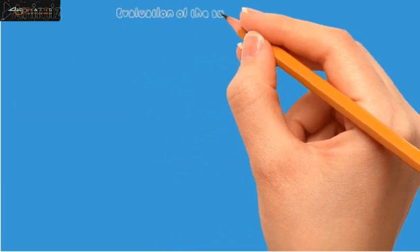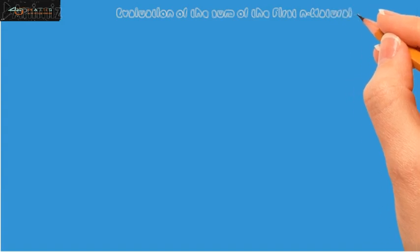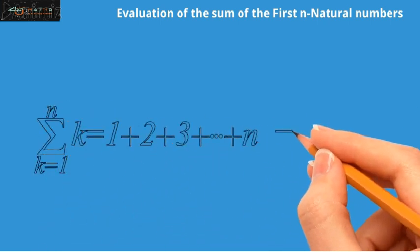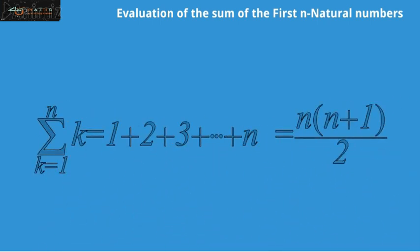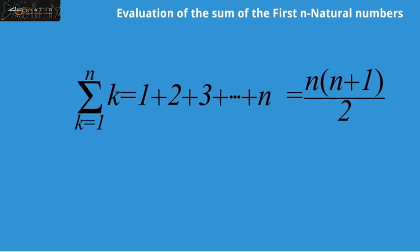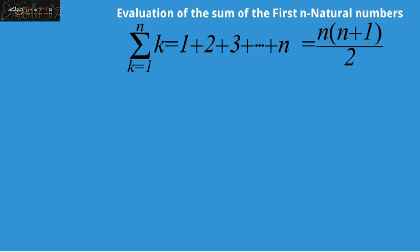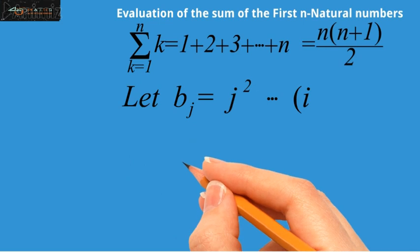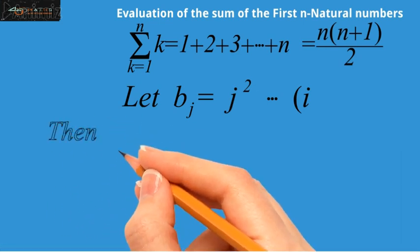Evaluation of the sum of the first n natural numbers. Here, we will try to prove that summation k equals 1 up to n, k is equal to n into n plus 1 divided by 2. So, we let bj equals j squared. Then, aj equals bj plus 1 minus bj.